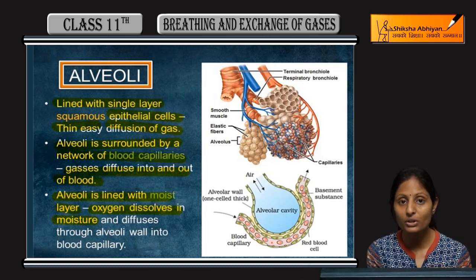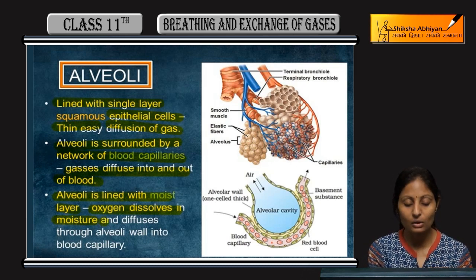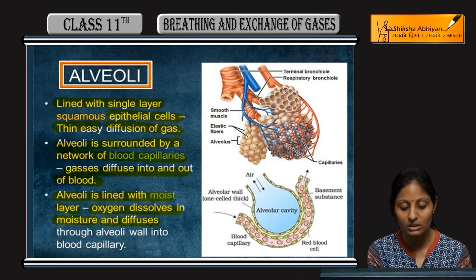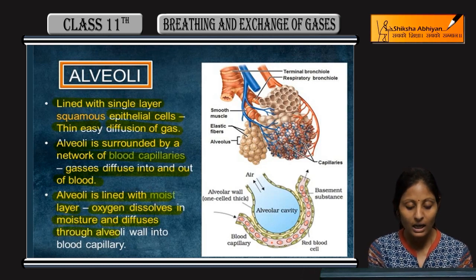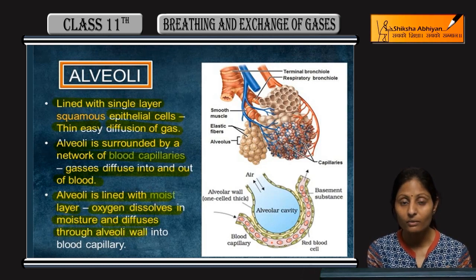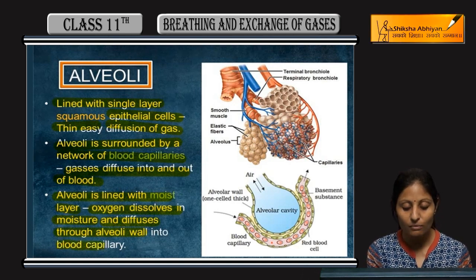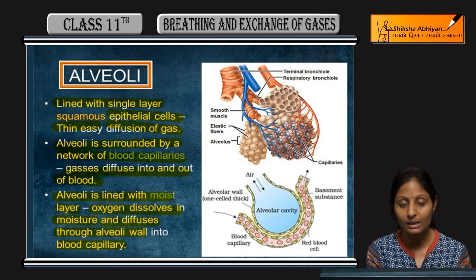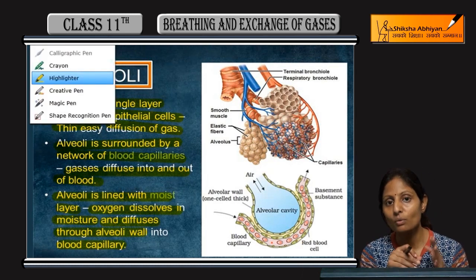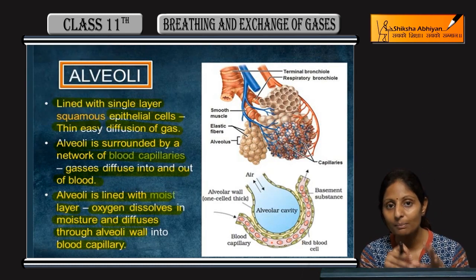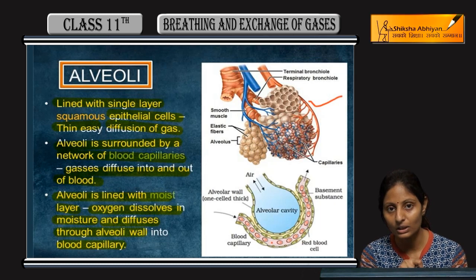The alveoli are lined with a moist layer. Oxygen dissolves in this moisture and, through the diffusion process, passes through the alveoli wall into the blood capillaries, crossing the moist epithelial cell layer of the alveoli.